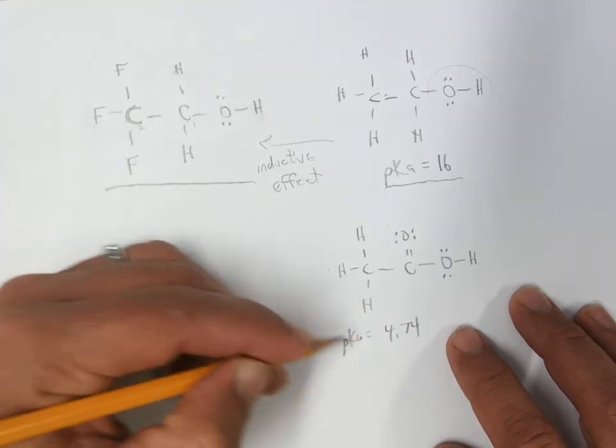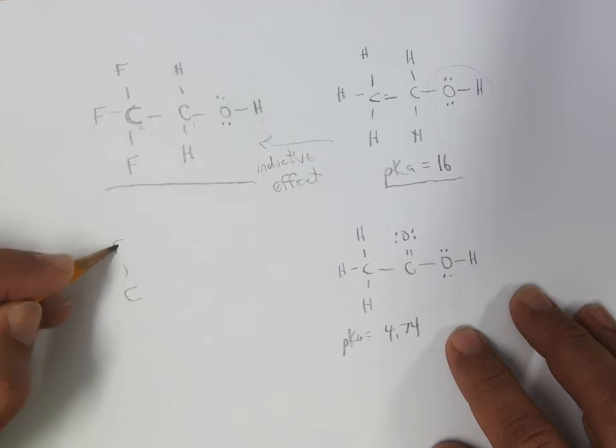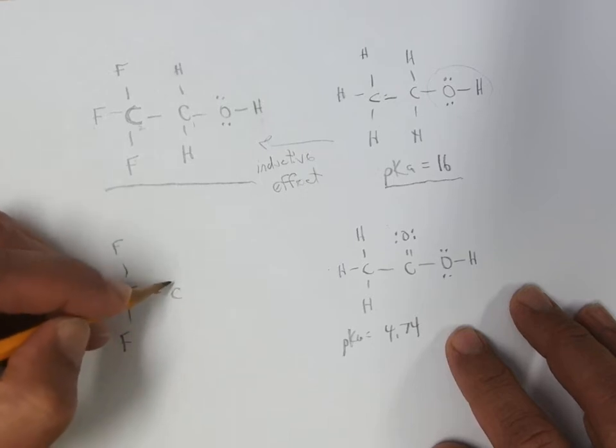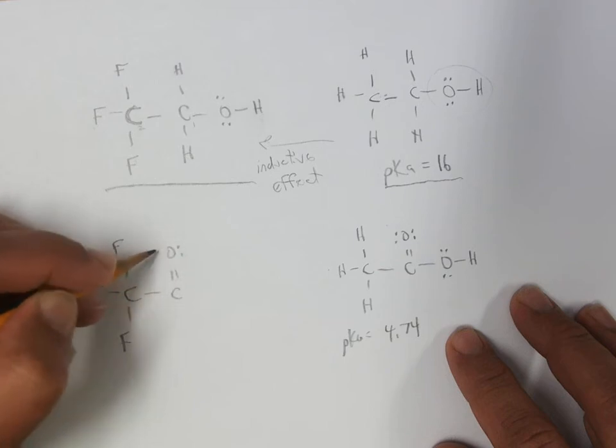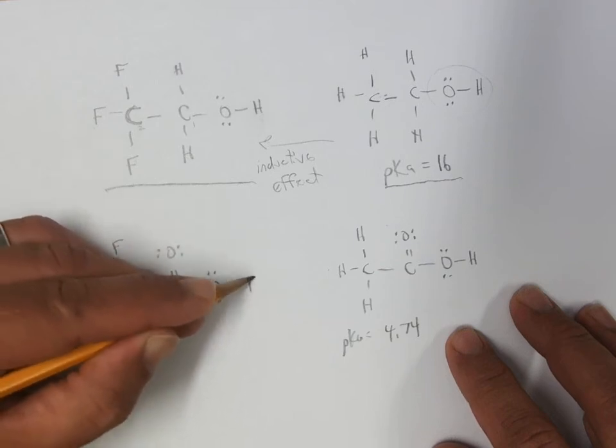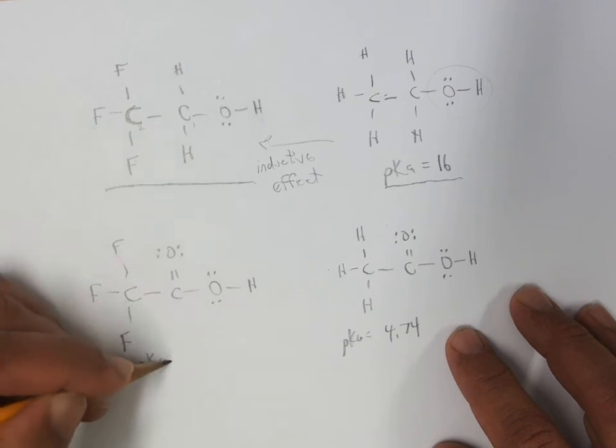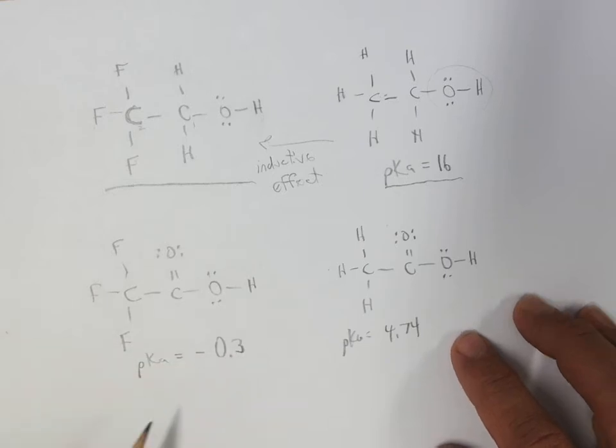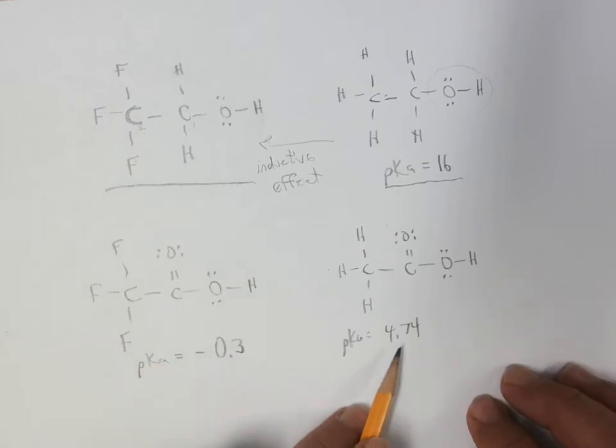And then trifluoroacetic acid. pKa, I believe, is about minus 0.3. Maybe it was 0.3, I don't remember, but about zero. So it looks like we decrease the pKa by about 5 units.